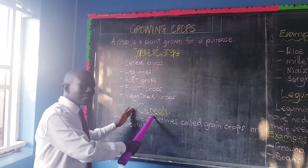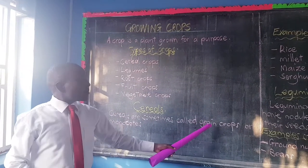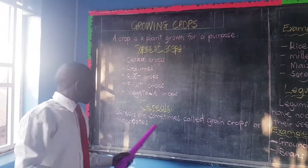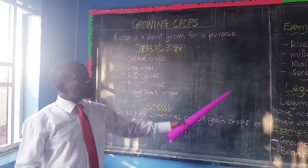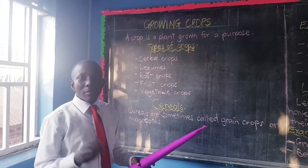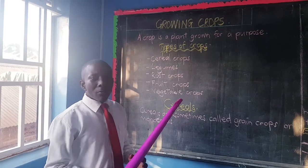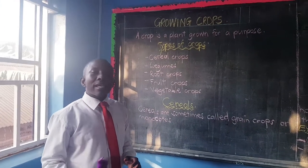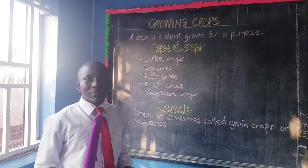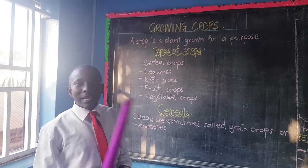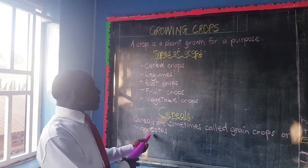Let us begin with cereals. Cereals are sometimes called grain crops or monocots. Why do we call them grain crops? We shall be listing examples like maize, rice, and others. Why do we call them grain crops? They produce grains. Those seeds of maize, of rice — we call them grains. That is why they are called grain crops.